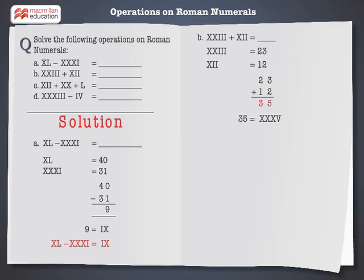Now convert the sum into Roman numeral. 35 is equal to XXXV. Hence, XXIII plus XII is equal to XXXV.